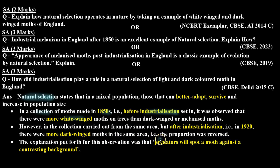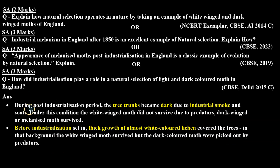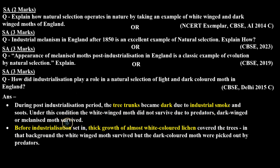The proportion was reversed. The explanation put forth for this observation was that predators will spot a moth against a contrasting background. During the post-industrialization period, the tree trunks became dark due to industrial smoke and soot. Under this condition, the white winged moth did not survive due to predators, while the dark winged or melanized moth survived.